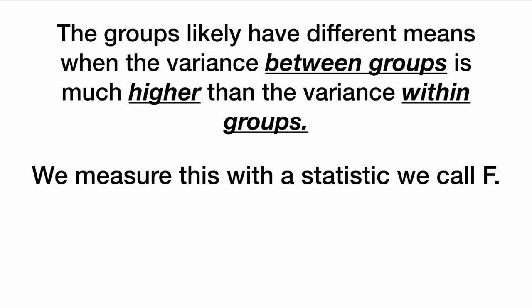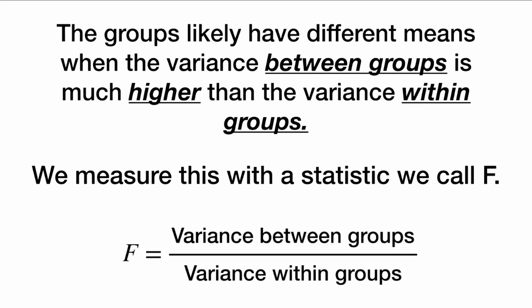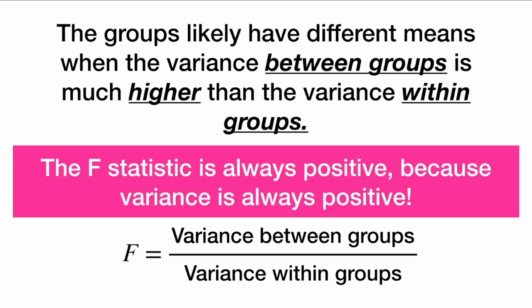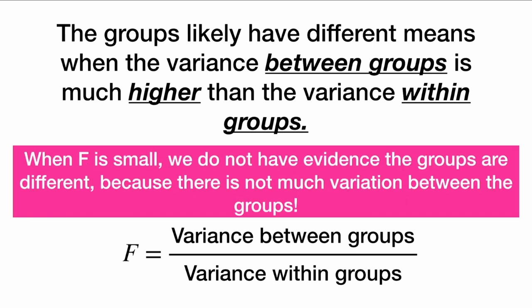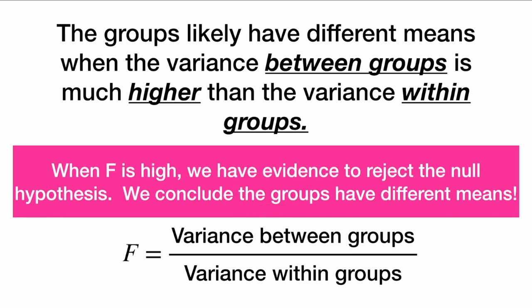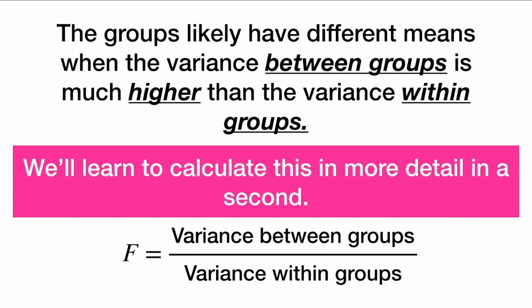We measure this with a statistic we call F. The F-statistic is the variance between the groups divided by the variance within the groups. The F-statistic is always positive because variance is always positive. When F is small, the variance between the groups is small and we do not have evidence that the groups are different. But when F is high, we have evidence to reject the null hypothesis and conclude the groups have different means.